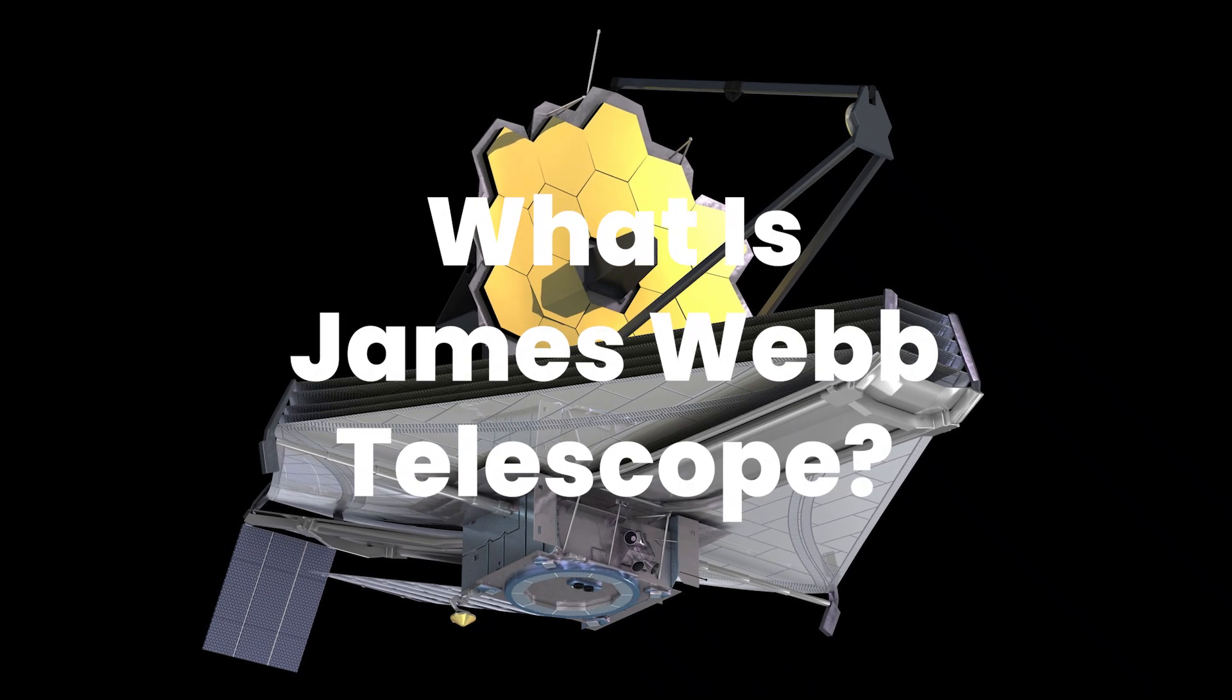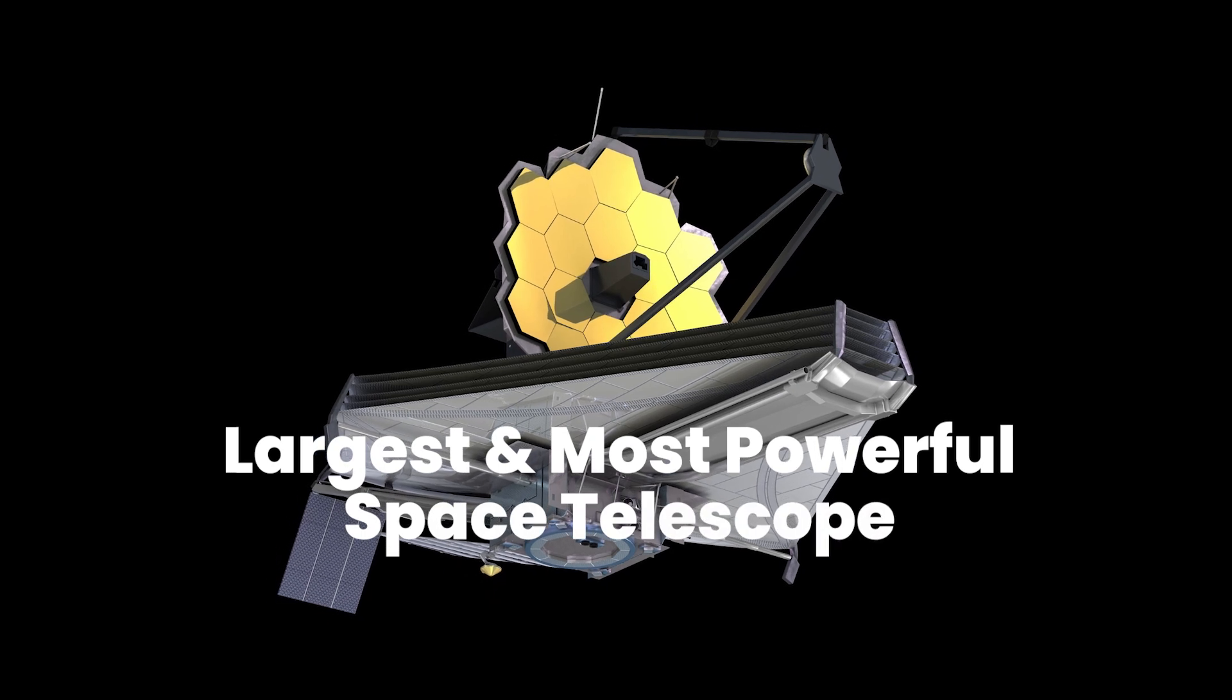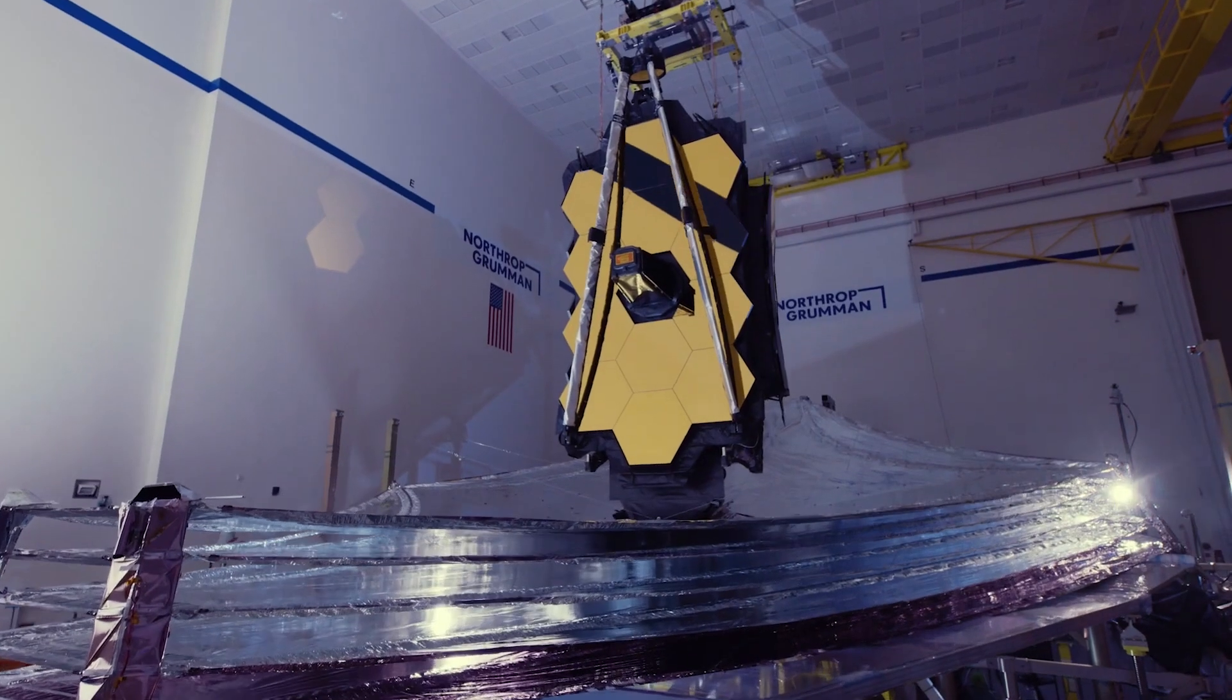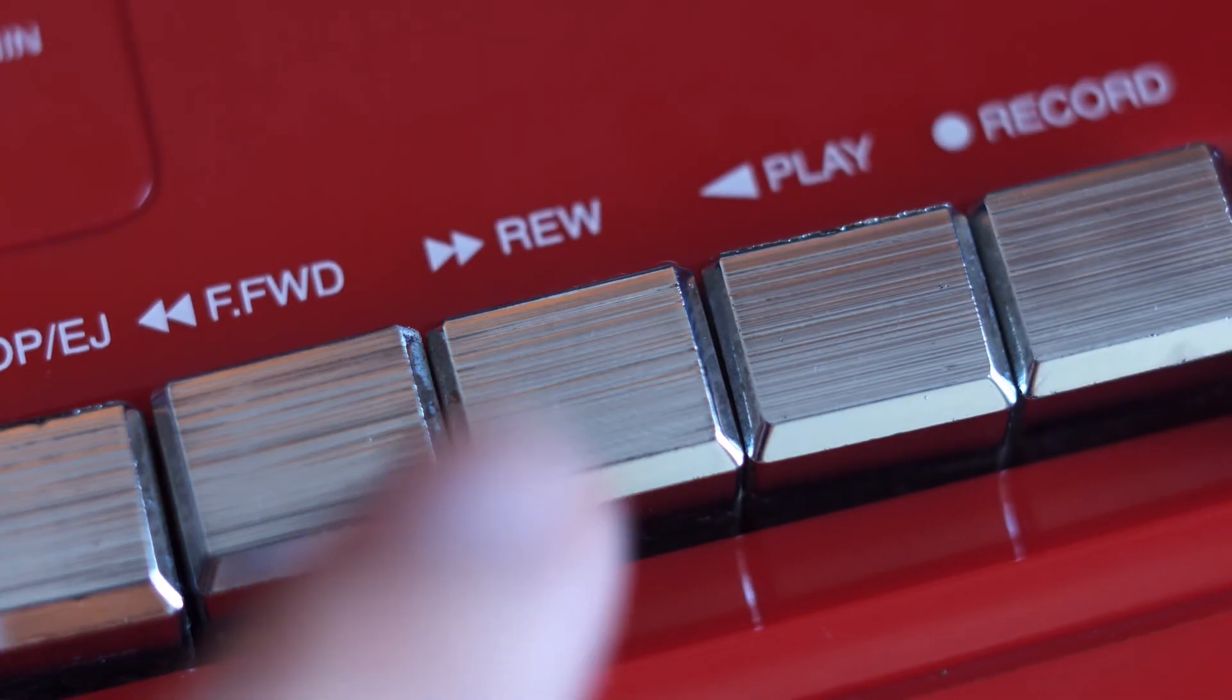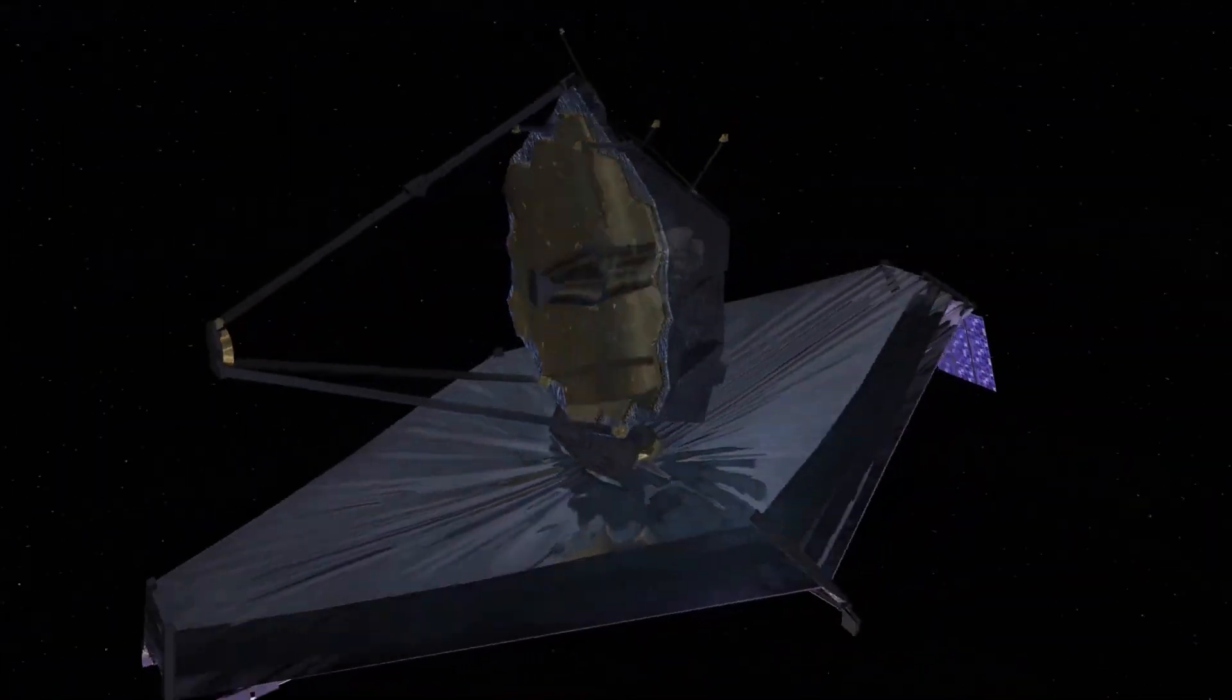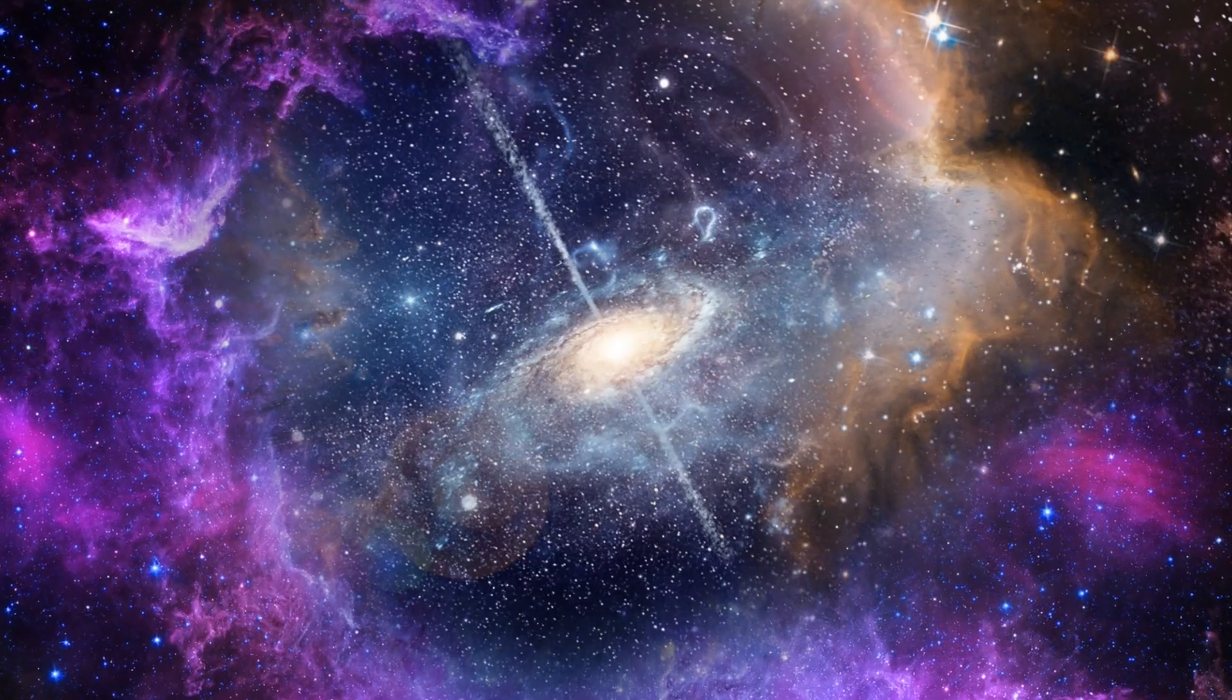The James Webb Telescope isn't just any ordinary telescope. It's the largest and most powerful space telescope ever constructed. With its cutting edge technology, it's poised to transform our understanding of the universe. Scientists will use it to look back in time to when the universe was only 200 million years old, essentially allowing us to rewind the cosmic clock. This telescope can capture images of some of the earliest galaxies ever formed, giving us a glimpse of the universe's infancy.